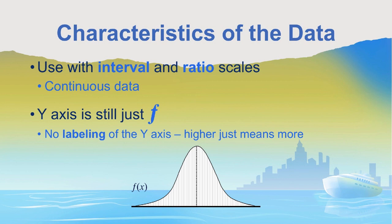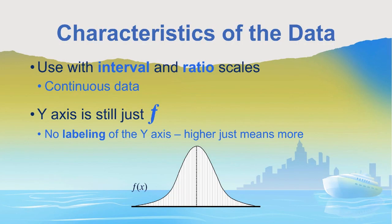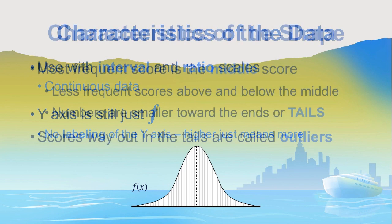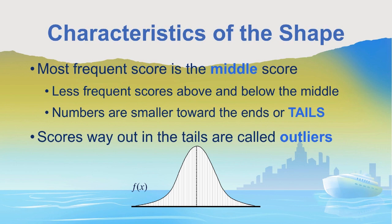The y-axis will be missing. With discrete probability distributions, we always included that y-axis because we needed to know whether we were going to sell one, two, three, or four cars in a given day. With this example, the y-axis is understood to be there and still stands for the frequency of the score occurring at any particular point. There's no labeling of the y-axis — higher just means more. At the top of the curve is the most frequently occurring score, while less frequently occurring scores will be out in the tails. Scores way out in the tails, far from the mean, would be outliers or extreme scores.